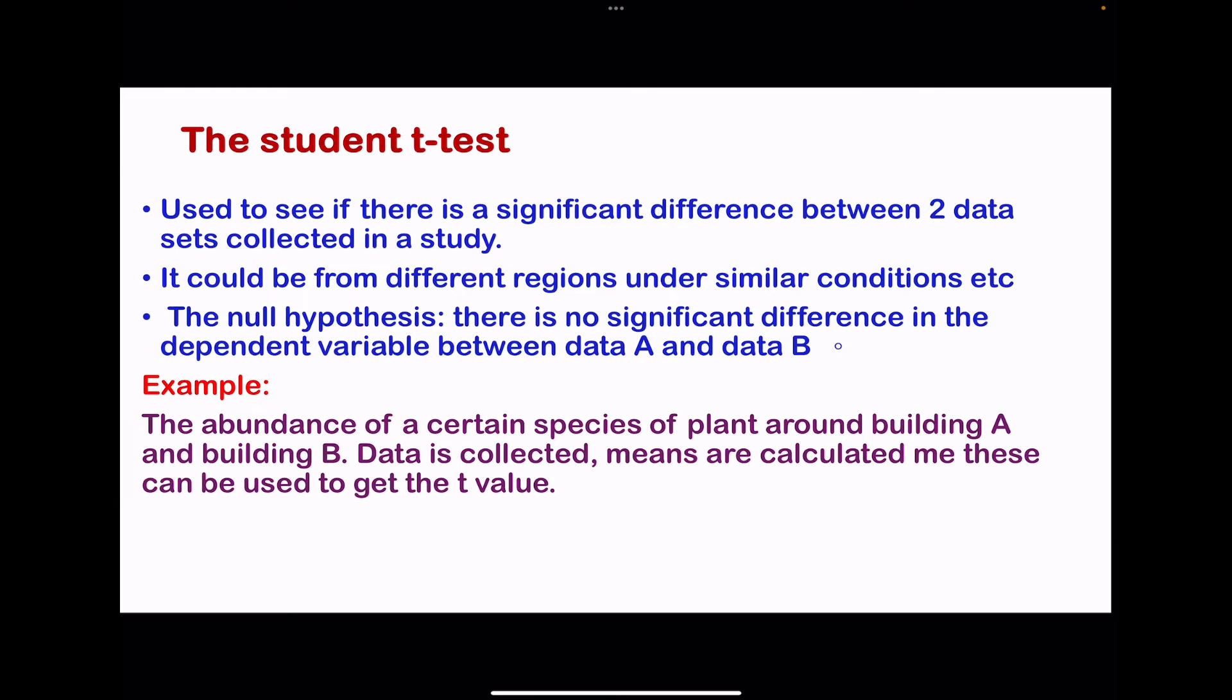The second test is the student t-test. Still here, we are trying to study if there is a significant difference between two sets of data. For example, there could be a difference in light intensity or different abiotic factors. Again, here we have to state the null hypothesis, which says there is no significant difference in the dependent variable between data A and data B.